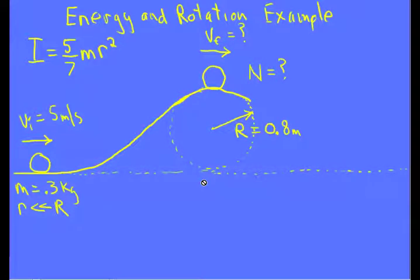Let's take a look at a rolling problem and we'll use energy to solve this. We have an object of some unknown shape rolling along the ground at 5 meters per second and encounters a hill and rolls up to the top of it, and we want to figure out how fast is it going at the top of the hill.